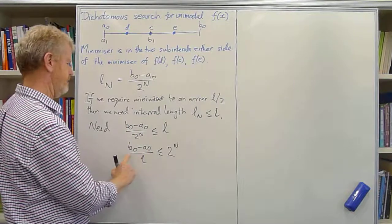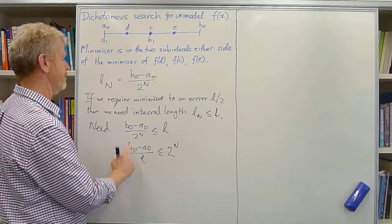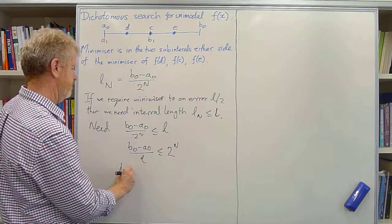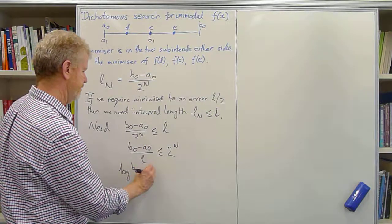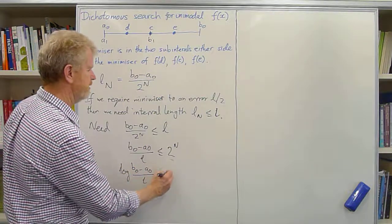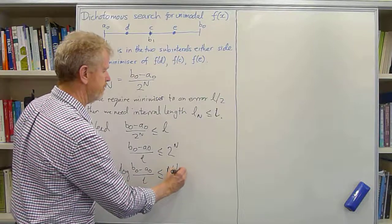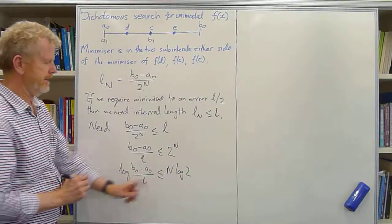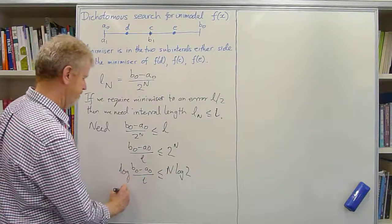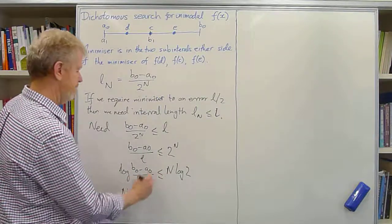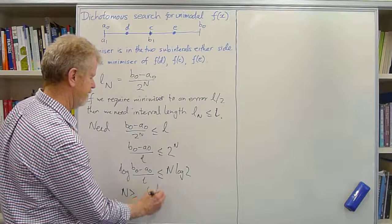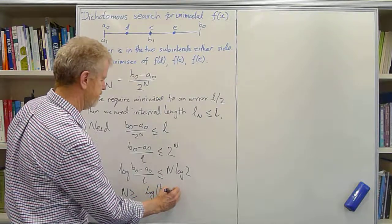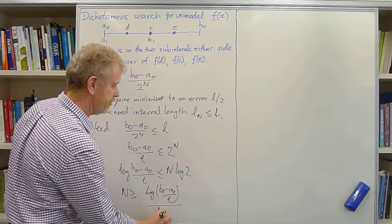Take the logarithm of both sides to any base. It doesn't really matter. So we get log of b0 minus a0 over l is less than or equal to n log 2. And hence, n has to be bigger than or equal to log of b0 minus a0 over l divided by log 2.